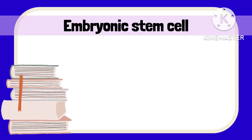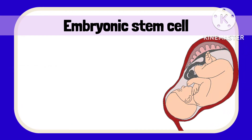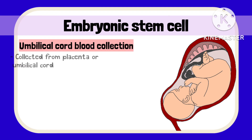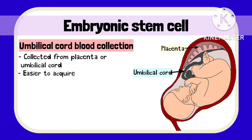A more ethical way of getting stem cells is through umbilical cord blood, which can be collected from the placenta or umbilical cord once the baby is delivered. This is much easier to acquire and does not cause any harm to the mother or to the baby.